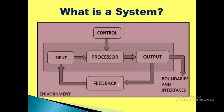Coming back to the diagram, we can correlate it easily. Input is whatever is taken for being processed. The processor processes the input and gives the required output through the output component. The control element controls input and governs all activities. Boundaries separate the environment from the system — inside and outside are separated by the boundary — and this system interacts with the environment through the interface only.